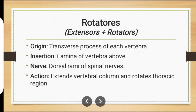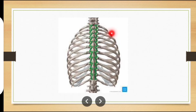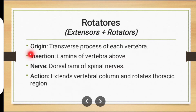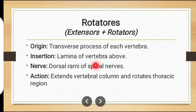Now the rotatores muscles. The muscles in green are the rotatores muscles. Origin: transverse process of each vertebra. Insertion: lamina of the vertebra above. Nerve supply: dorsal ramus of spinal nerves.